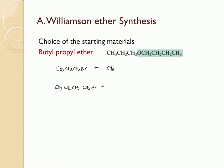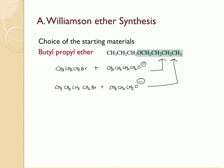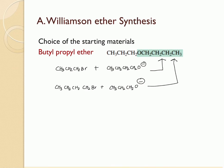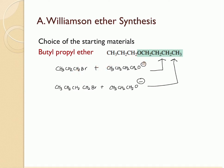If you start with propyl bromide, the alkoxide would be butoxide. If you start with butyl bromide, the alkoxide would be propoxide. Either route leads to the product because both are primary alkyl halides, which will undergo an SN2 substitution reaction. The alkoxide ion makes a nucleophilic attack on the electrophilic carbon, thrusting out the bromide and forming butylpropyl ether.